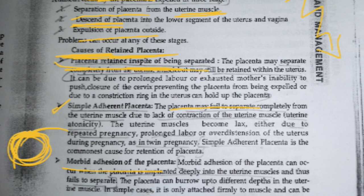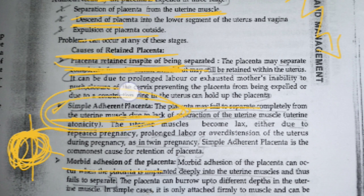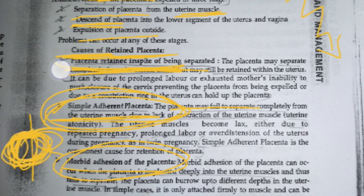The third type is where the doctor tries to remove the placenta but only half detaches — some parts of the placenta remain. So: in the first type the placenta doesn't detach; in the second type it won't detach because it is deeply embedded; and in the third type the placenta is only partially detached.